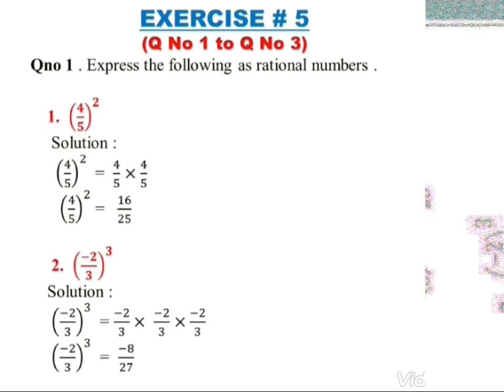Question number one: express the following in exponential notation as a rational number. The first part is (4/5) to the whole power 2. Here 4/5 is the base and 2 is the exponent or power, meaning 4/5 appears two times. So we write 4/5 multiplied by 4/5. Multiplying: numerator 4×4 is 16, denominator 5×5 is 25. So (4/5)² equals 16/25.